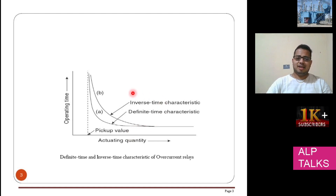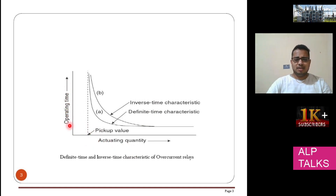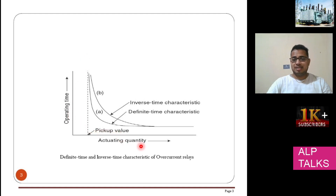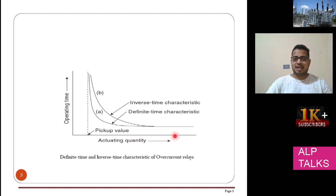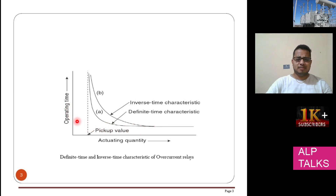This characteristic is very important. On the x-axis you have the actuating quantity, and on the y-axis you have the operating time. The actuating quantity is the current value — for example, if instead of 100 amps, 200, 300, or 400 amps is coming, it needs to be disconnected very quickly, otherwise some problem will happen. So within very less time the relay will operate. If the current amplitude is very less, then no problem — it can withstand for more time. So here you have definite time characteristics and inverse time characteristics.